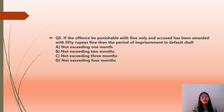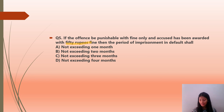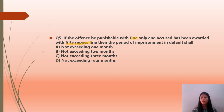Question number 5: If an offense is punishable with fine only and the accused has been awarded 50 rupees fine, then the period of imprisonment in default shall be — option A not exceeding one month; option B not exceeding two months; option C not exceeding three months; option D not exceeding four months. What is the correct answer? Which section of IPC deals with this?